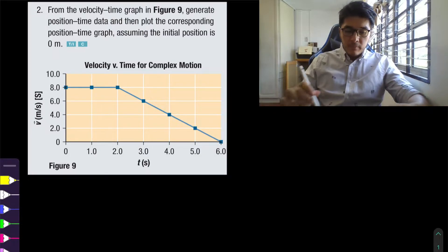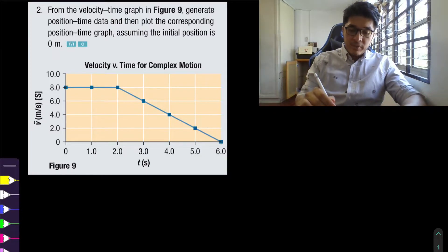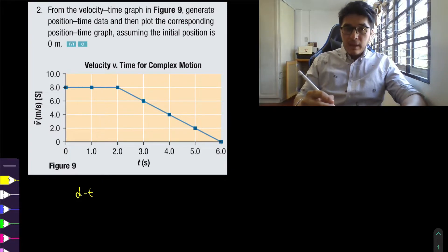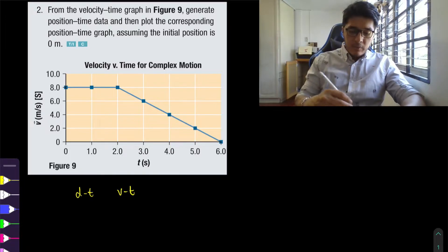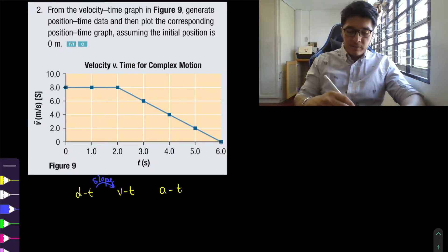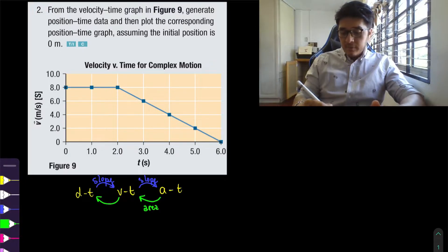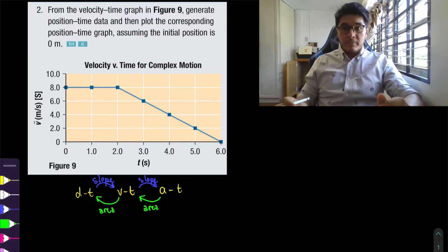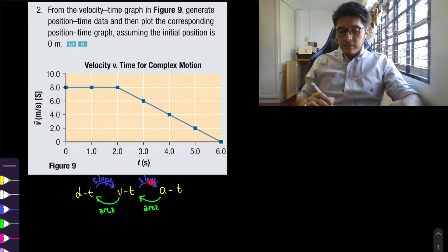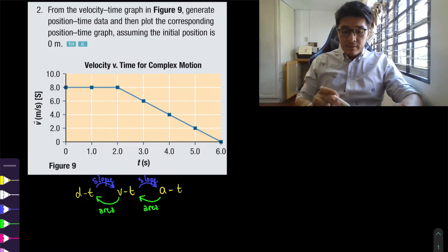One quick way to remember how to go from one graph to the other: start with our d-t graph. If we want to go to our velocity-time graph, we need to calculate the slope. From our velocity-time graph, if we want to calculate the acceleration-time graph, we also have to calculate the slope. We can go back in reverse by calculating the area under the graph. So: d-t to v-t, calculate the slope; v-t to a-t, calculate the slope; and in reverse, calculate the areas.